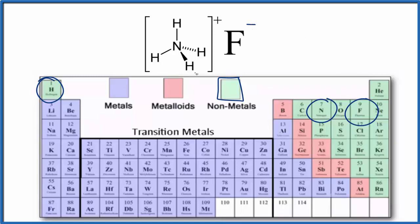You can see that the ammonium ion with its positive charge is attracted to the fluoride ion with the negative charge. These opposite charges attract, and that's what forms the ionic bond.